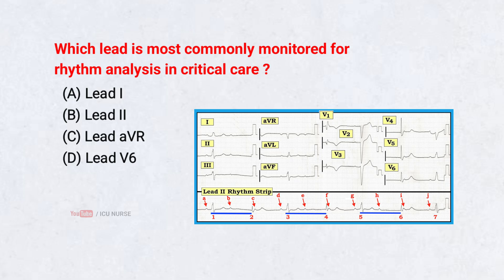Which lead is most commonly monitored for rhythm analysis in critical care? A. Lead 1, B. Lead 2, C. Lead AVR, D. Lead V6. Correct answer: B. Lead 2.